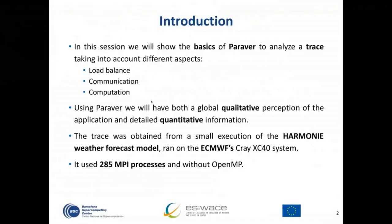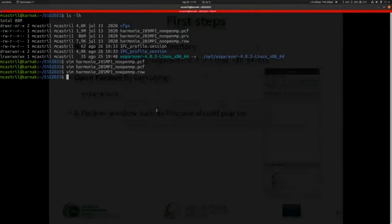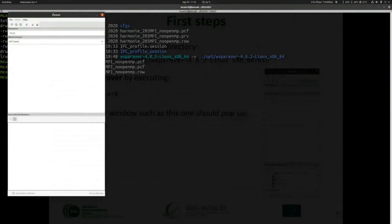Now we go to the first step, which is opening Parabert 2. You should navigate into the Parabert directory inside the folder for this session, and open it by running the binary inside the bin folder — with an ampersand at the end if you want to free your terminal. A Parabert window like this should pop up. I recommend you verify that you can open Parabert.